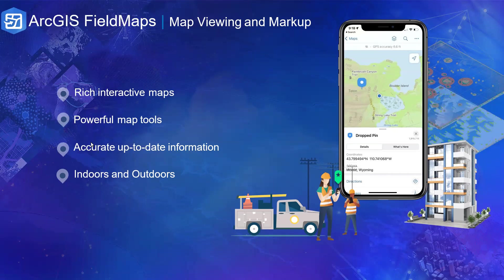This capability also lets you locate assets and information about them. For example, if you're doing asset management, you can rely on already existing data embedded in your base map to know where assets are located and what information is associated with them. This is critical when someone is trying to update or add new datasets to the feature.